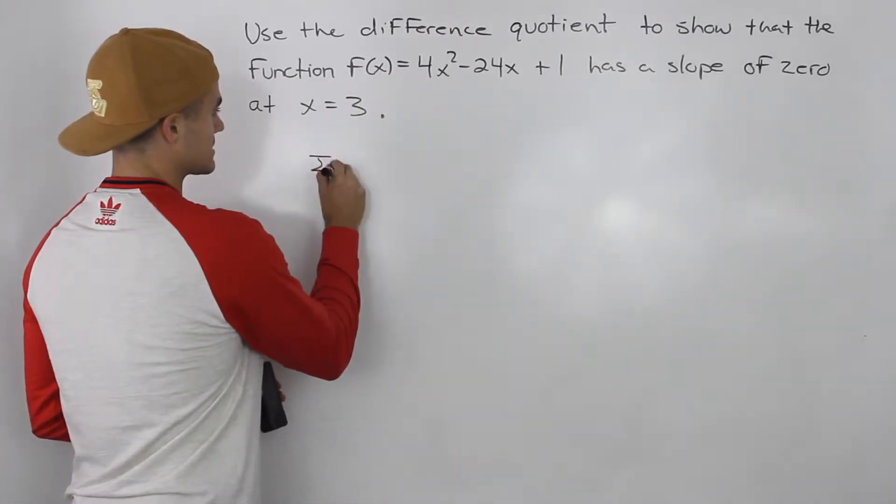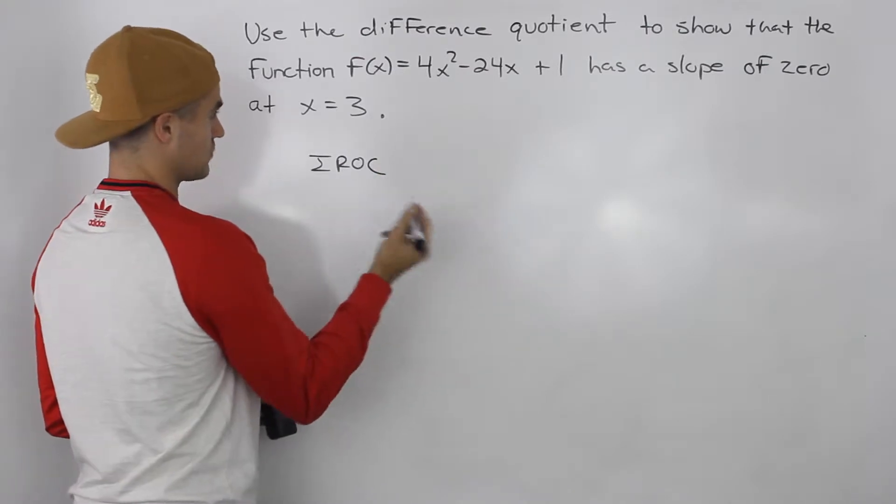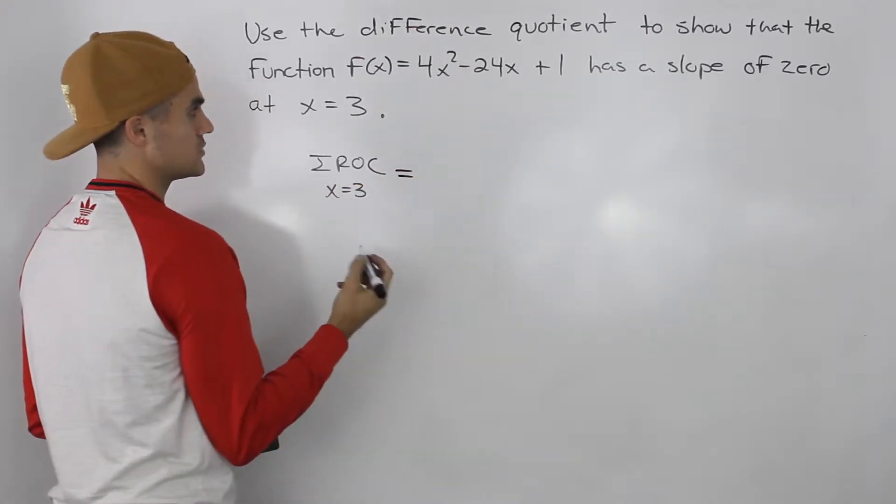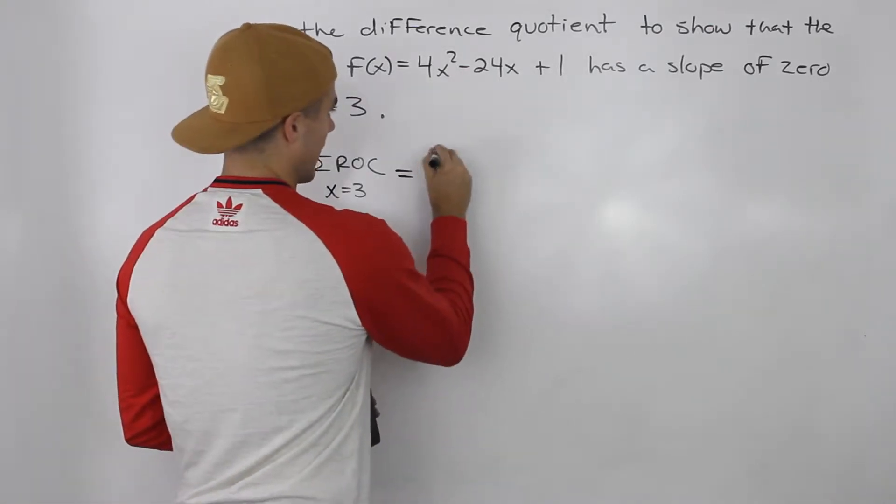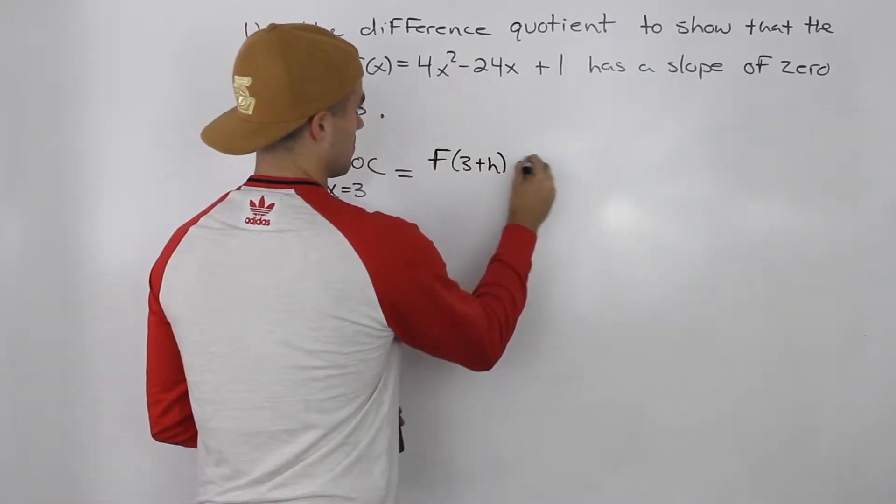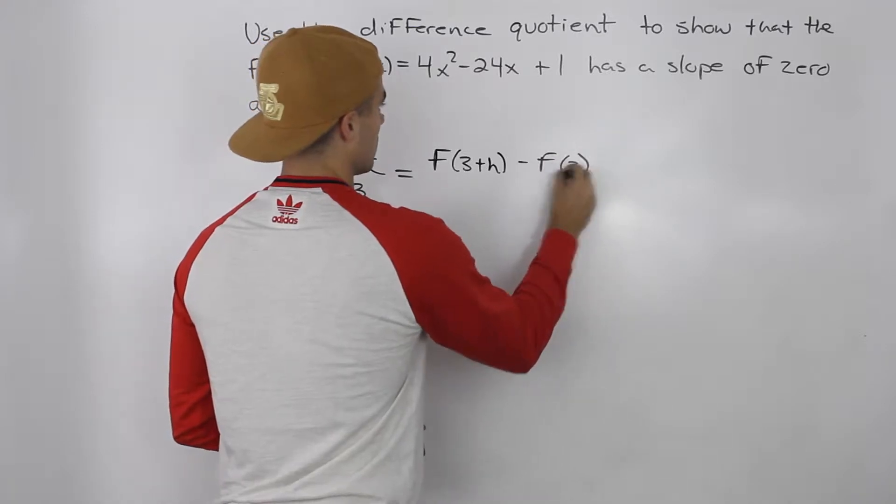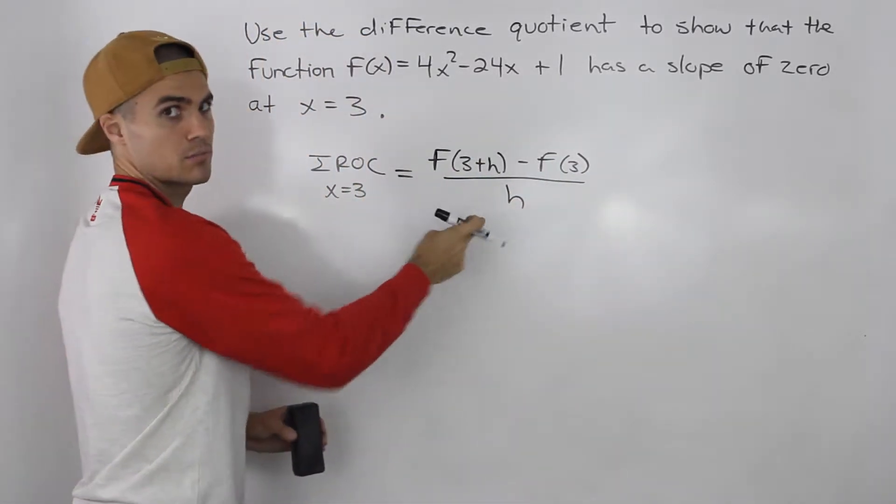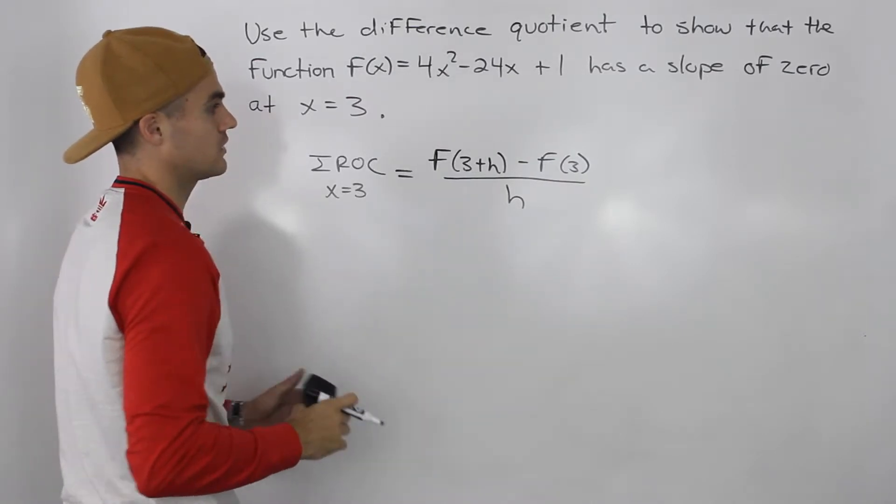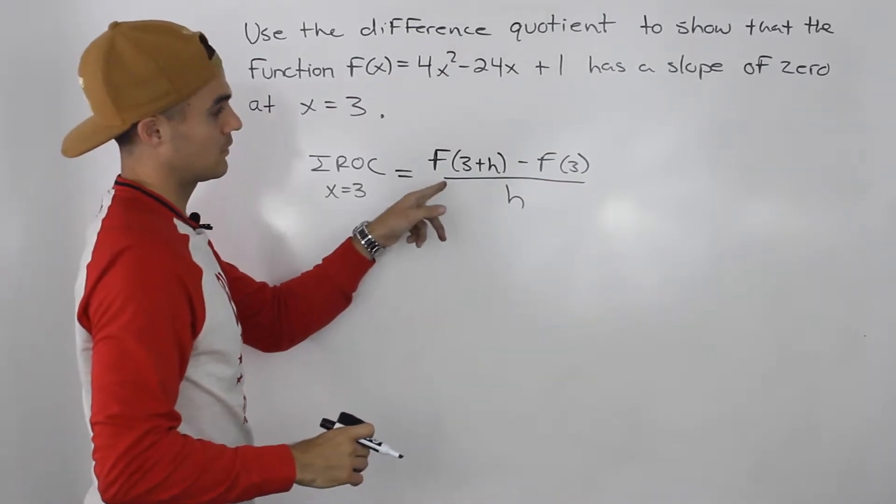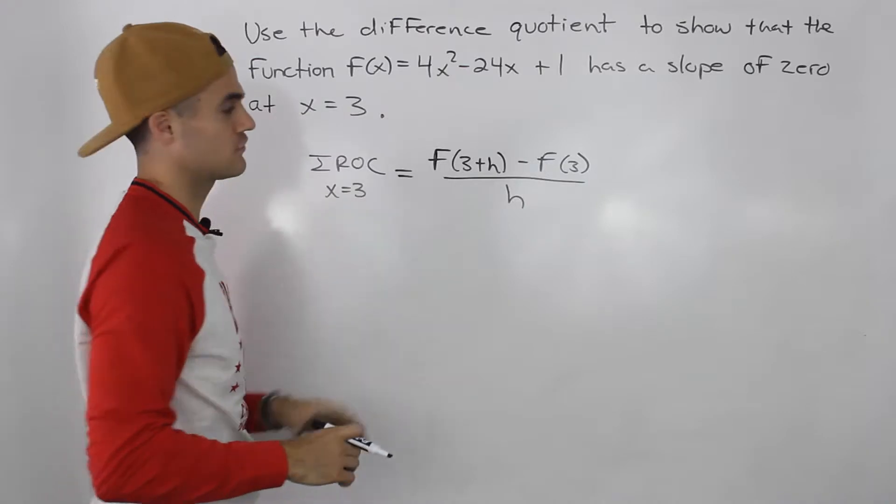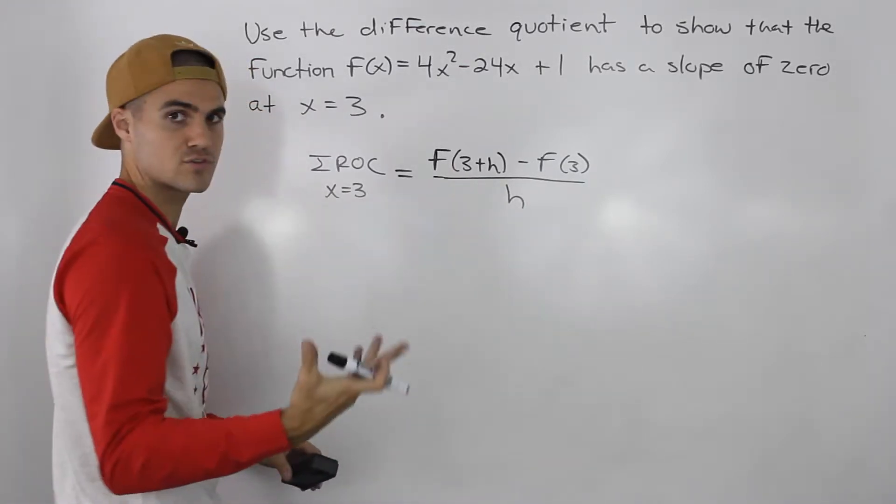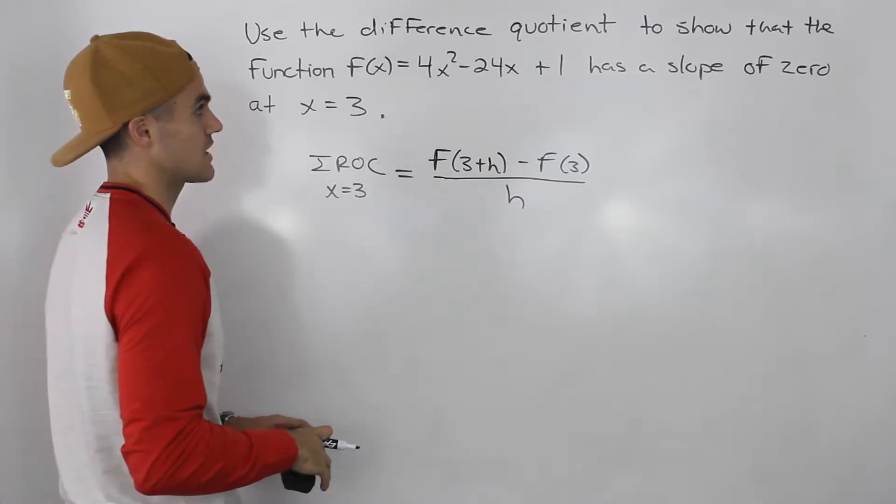So to find the instantaneous rate of change or the slope of the tangent at this x value of 3, how would we do that? Well, we would take f(3 + h) - f(3) all over h. Writing this out here should be pretty automatic for you at this point. If it's not, then I would highly recommend you go back to the lecture videos and watch the overview on the difference quotient and the different examples that we go through.